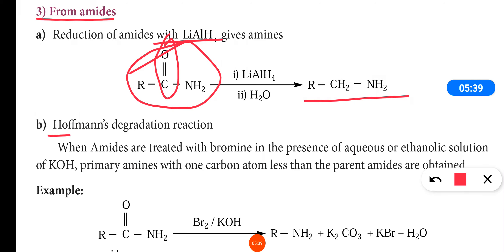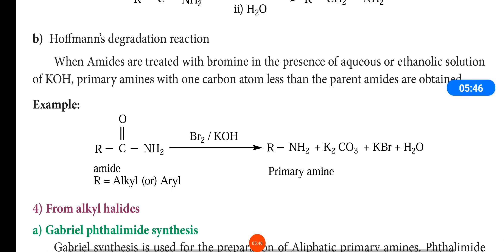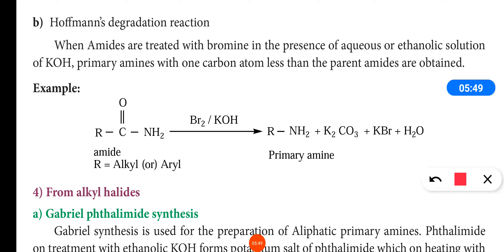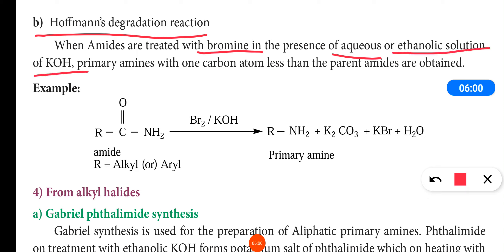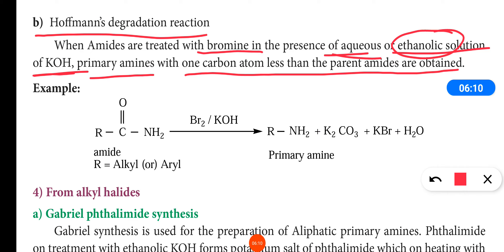The next method is Hoffman's degradation reaction, which is also a method of preparation of amines from amides. When amides are treated with bromine in the presence of aqueous or ethanolic solution of KOH, primary amines with one carbon atom less than the parent amide are obtained.